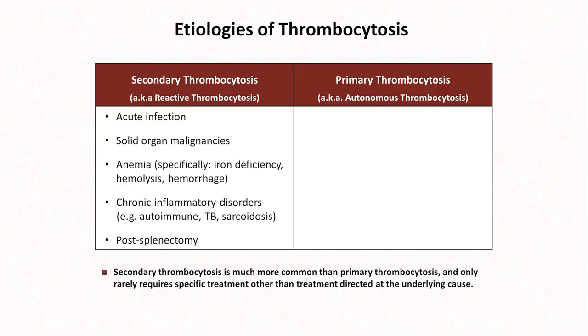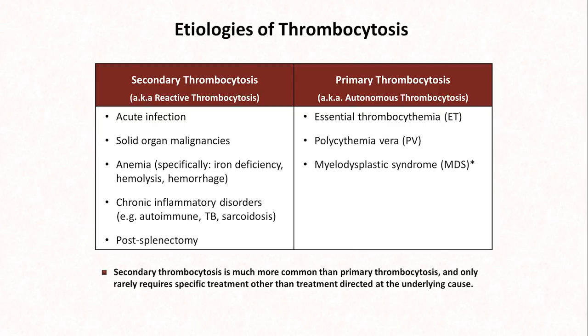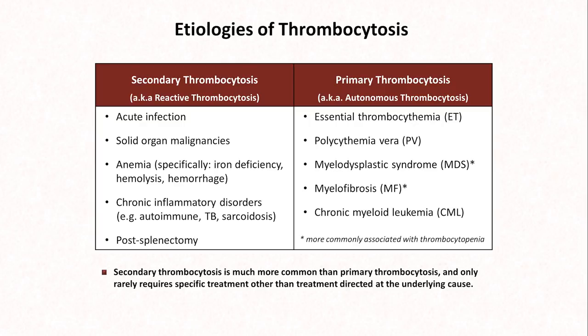The five notable causes of primary thrombocytosis include essential thrombocythemia, polycythemia vera, myelodysplastic syndrome, myelofibrosis, and chronic myeloid leukemia. MDS and MF are actually more commonly associated with thrombocytopenia, but a significant minority present with thrombocytosis instead.